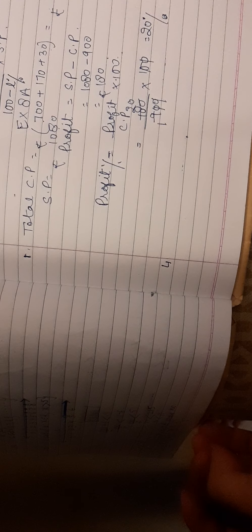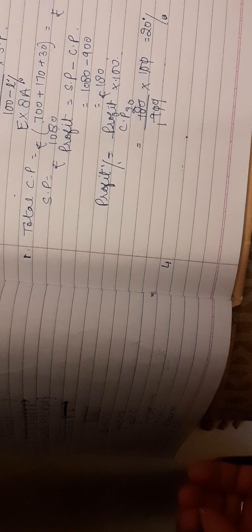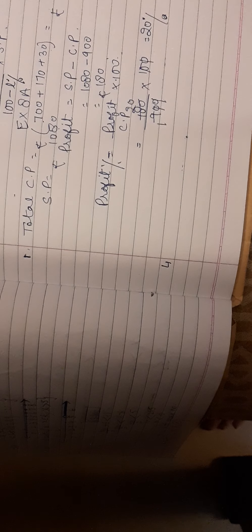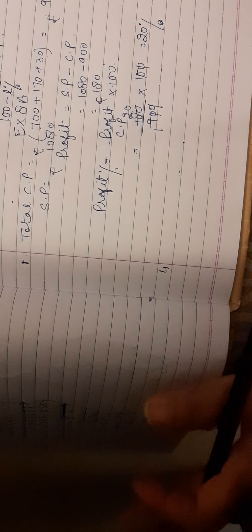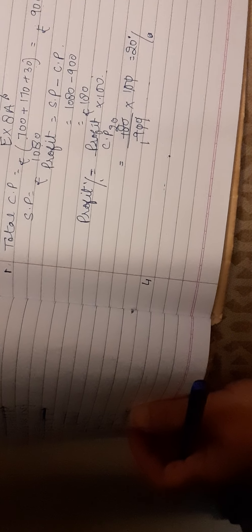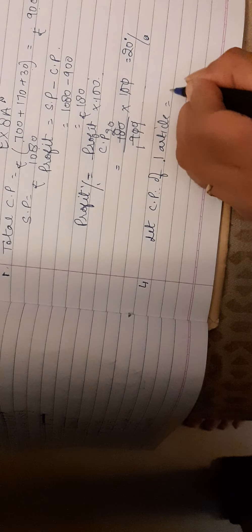Now I am taking up the fourth question. It says: if the selling price of 20 articles is equal to the cost price of 15 articles, then what is the loss percent? No cost for the articles is given, so we have to suppose the cost on our own. Let CP of 1 article equal Re. 1.